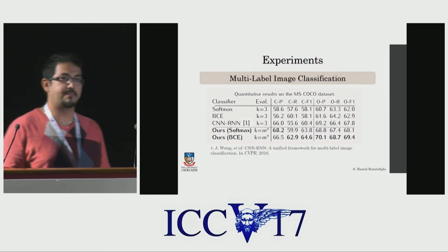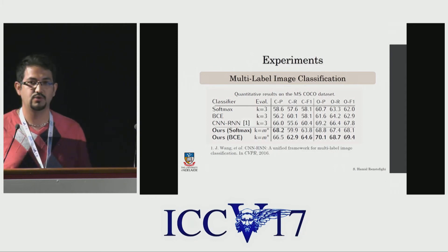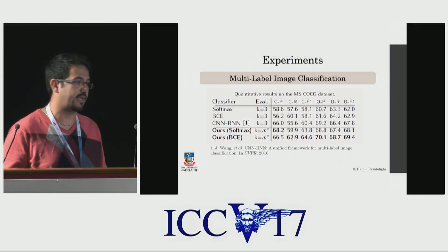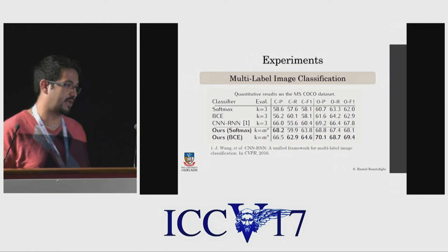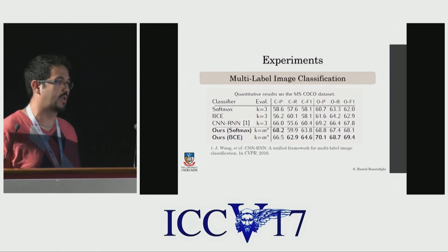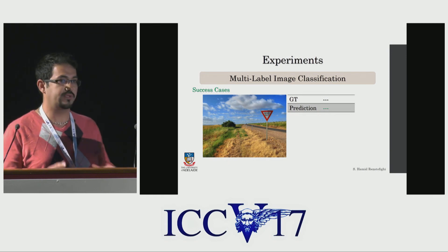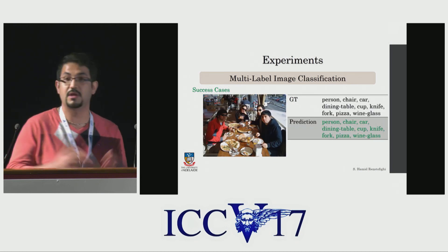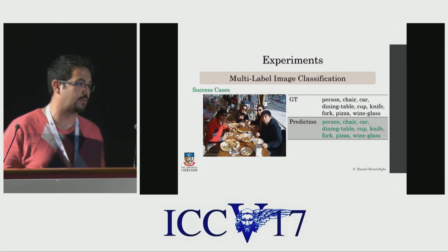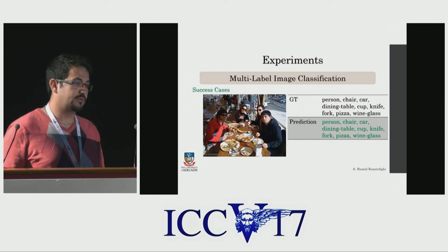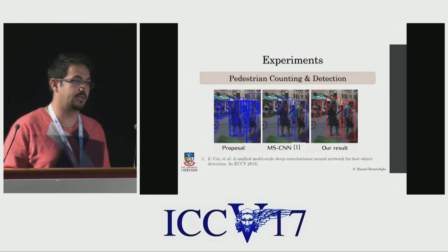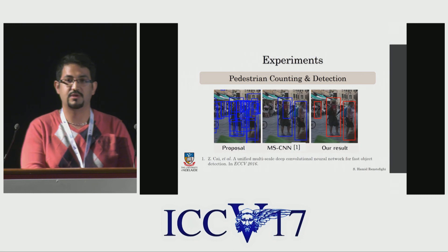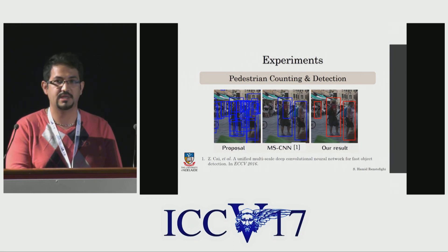We evaluate our approach on the task of multi-label image classification on two popular datasets, MS-COCO and PASCAL-VOC. We show that we can easily outperform commonly used classifiers and also state-of-the-art sequential methods like CNN-RNN. Our method is able to predict images with no tags or images with many tags, without any heuristic thresholding — it is completely end-to-end. We also applied our method to pedestrian counting and detection, showing that we can take any state-of-the-art detector and improve its performance with this approach.